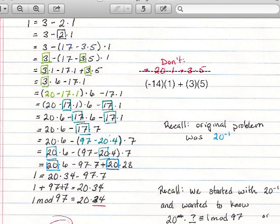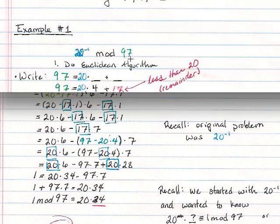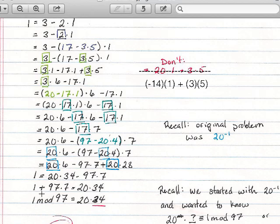Now, remember the 20 is what we want to define the inverse of. So we really want that mostly by itself. 20 times something needs to be on the side by itself. So I'm going to move this 97 times 7 over to the other side. So I have 1 plus 97 times 7 equals 20 times 34. Now, the nice thing about this is that if you recall, the problem was modulus 97. Therefore, 1 plus any multiple of 97, it's just 1 mod 97. So basically, anything with the mod in it, with the modulus in it, will go away. So this goes away, and we have 1 mod 97 equals, or is congruent to 20 times 34.